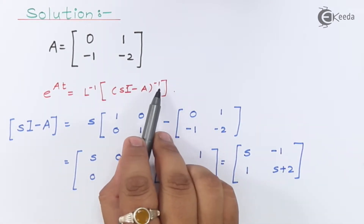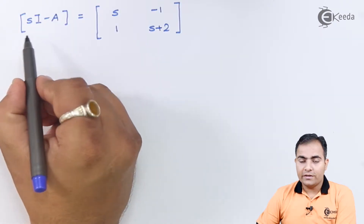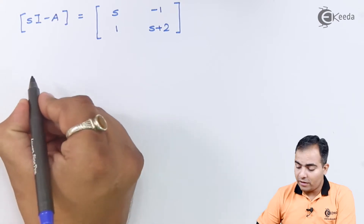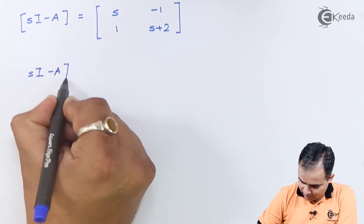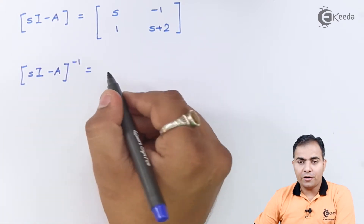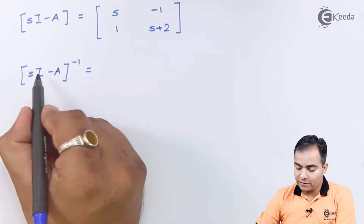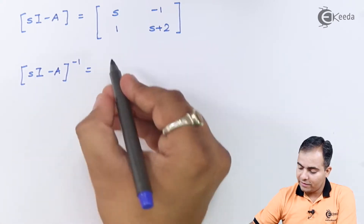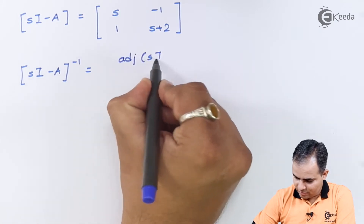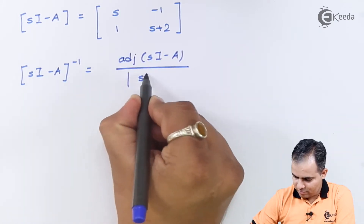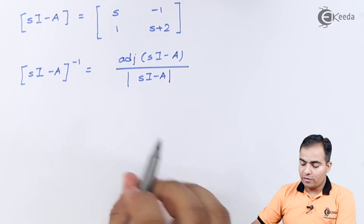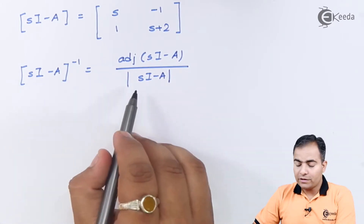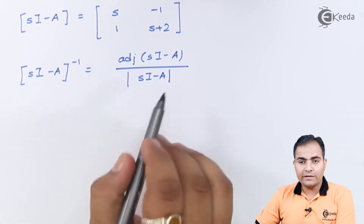Now we find the inverse of (sI - A). The formula is: (sI - A)⁻¹ = adjoint(sI - A) / determinant(sI - A). First, we find the determinant of (sI - A) by computing A×D - C×B: s×(s+2) - (-1×1) = s² + 2s + 1.